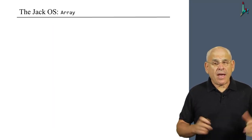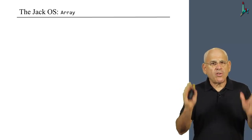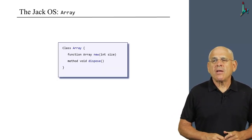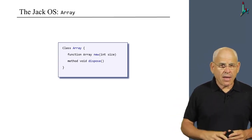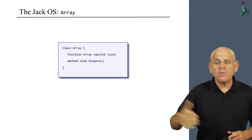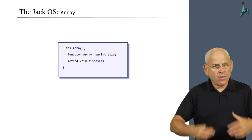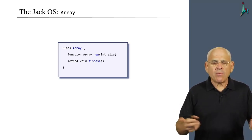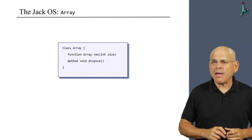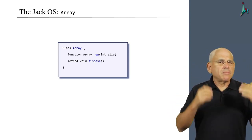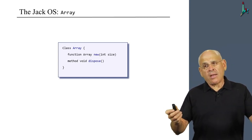We also have an array class in the operating system. This is somewhat unique to the Jack language. If you want to create an array in a Jack program, you have to make a call to array.new. This will create the array, and later on you can access this array using an index which is surrounded by square brackets. This syntax is supported by the Jack compiler. When you no longer need the array, we recommend to dispose it.